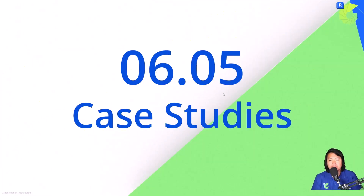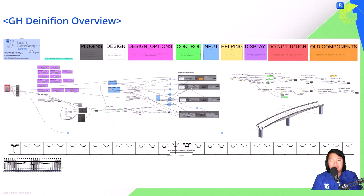Hi everyone! Now we are in the case study for session 6. What we're going to do: we have a bridge model where we will create sections along the bridge axis and place them into our sheet. We'll automate a bunch of sections created from Revit using Rhino inside Revit.